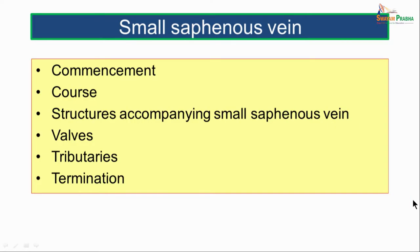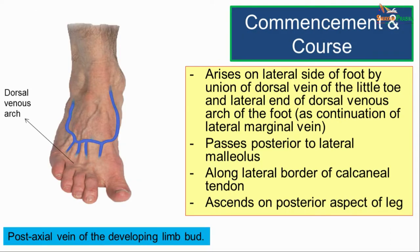Moving on to the small saphenous vein. We will discuss it under the headings of commencement, course, structures accompanying the small saphenous vein, valves, tributaries, and termination. The small saphenous vein is the post-axial vein of the developing limb bud.